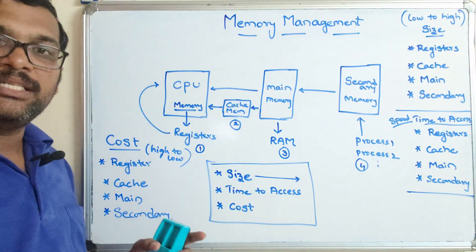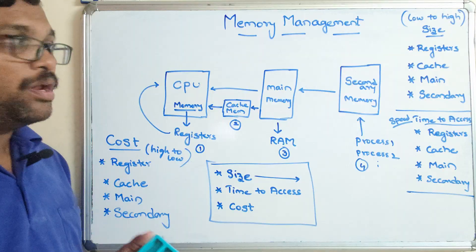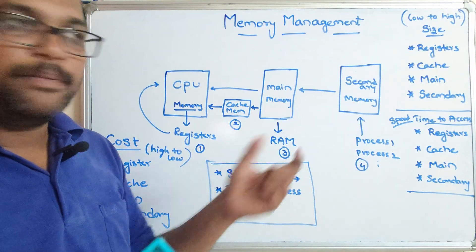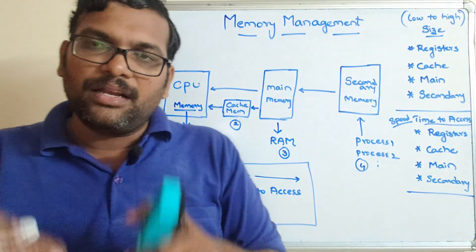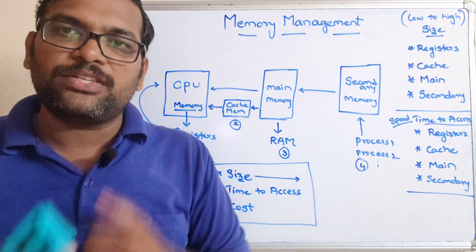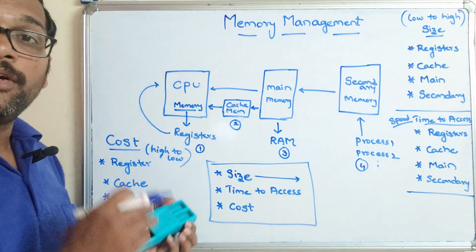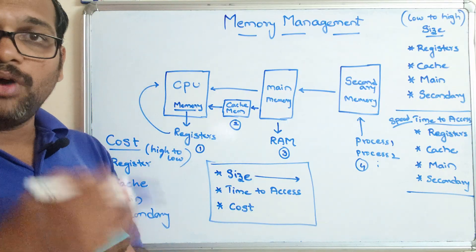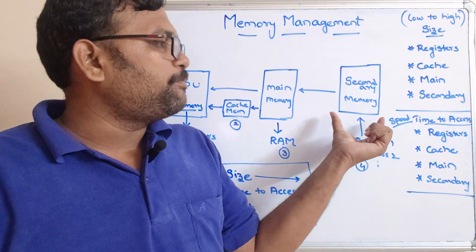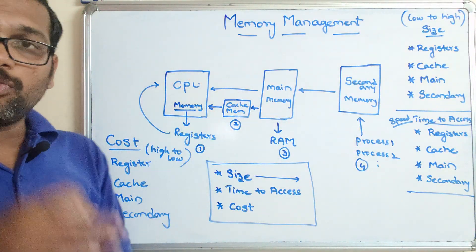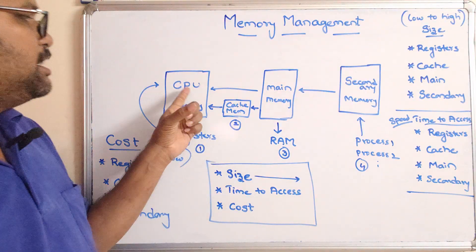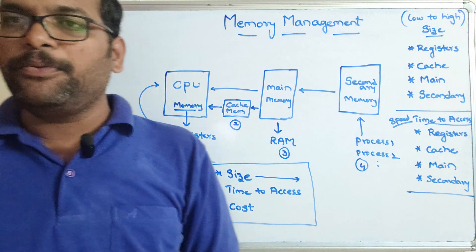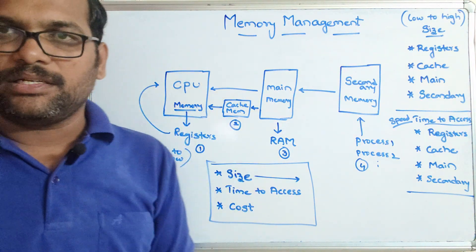So we have seen different categories of memories. From the next session, we are going to discuss how processes will be transferred from secondary memory to the CPU. Transferring data from secondary memory to main memory, or main memory to CPU, is called swap in and swap out — swap in means loading, swap out means sending. We are going to use logical address and physical address. Any process will be executed only by the CPU through the main memory. The CPU cannot access a file directly from secondary memory; it can only access files from main memory, cache, or registers.